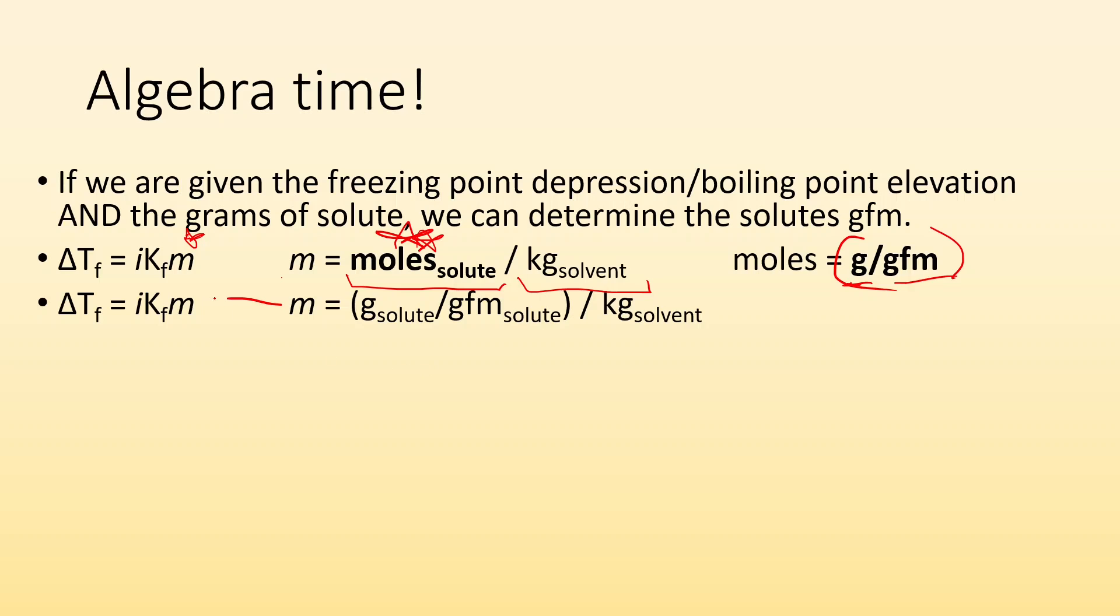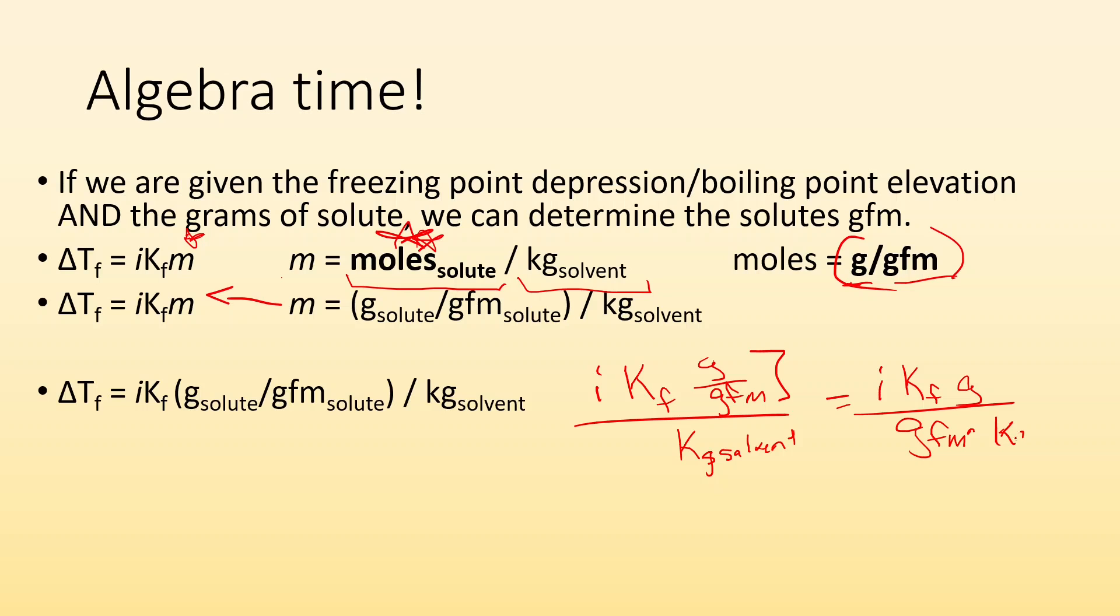So, I can plug that now into this equation, and I'm going to get kind of an ugly equation, but I like to do all of my rearranging and stuff before I start working with any numbers. So, I could rewrite this. I got IKF times grams over GFM, all divided by the kilograms of the solvent. And if I got this fraction up top, I can basically, I just move the GFM to the bottom. So, I get I times KF times grams divided by the GFM times the kilograms of solvent.